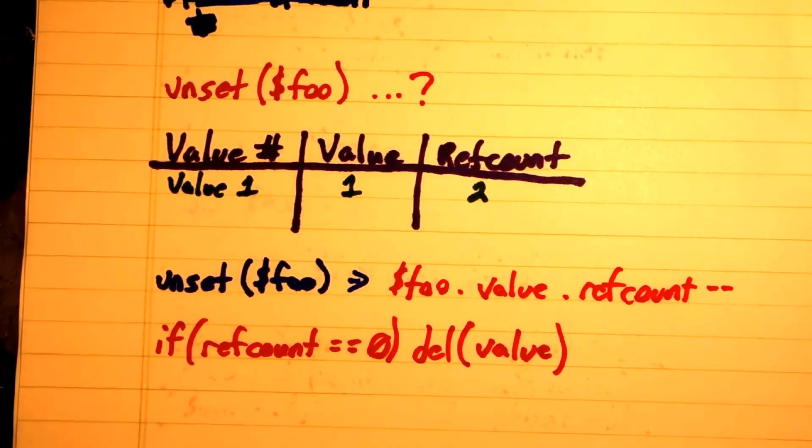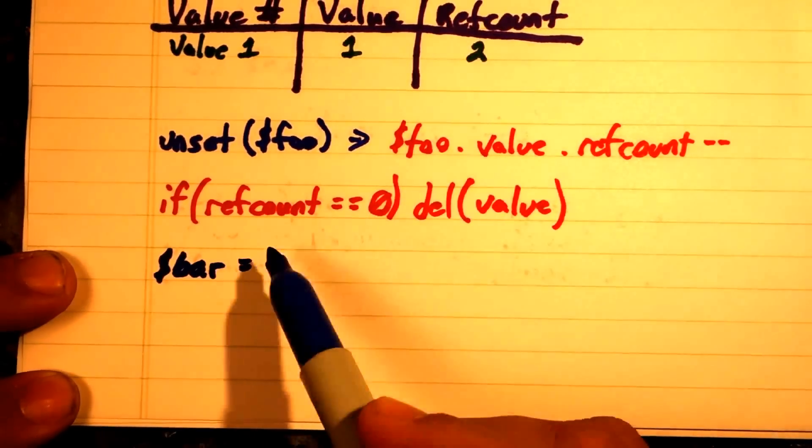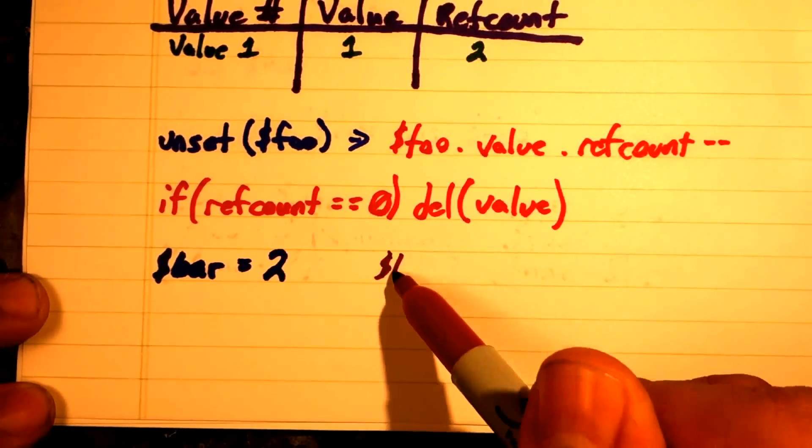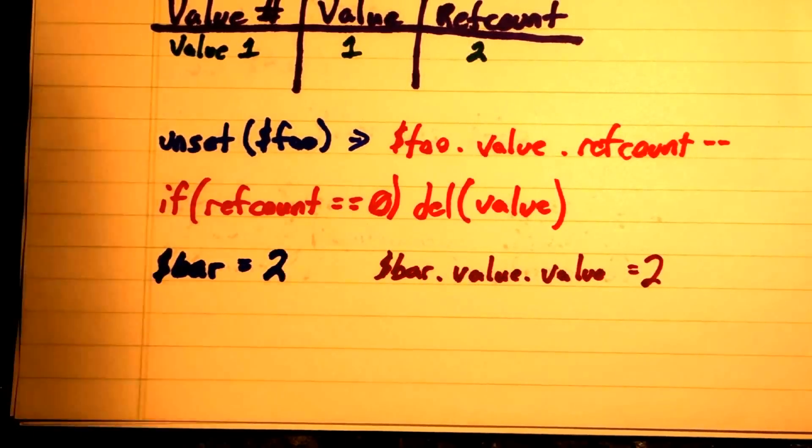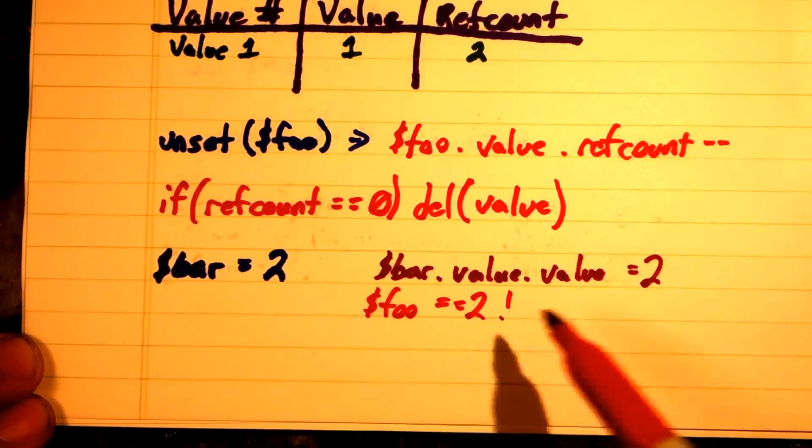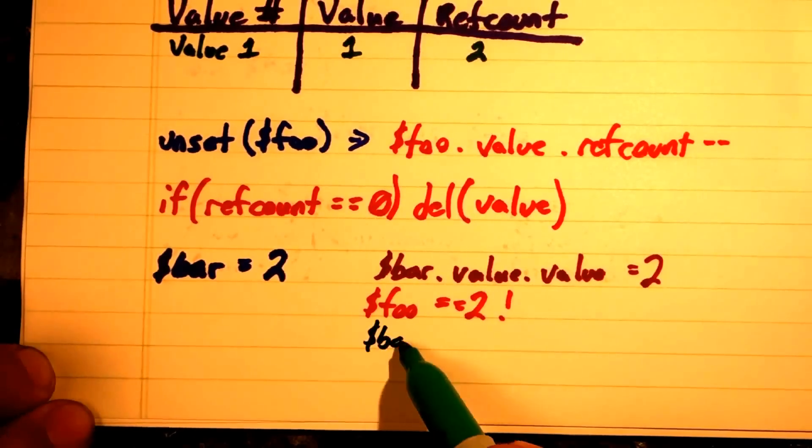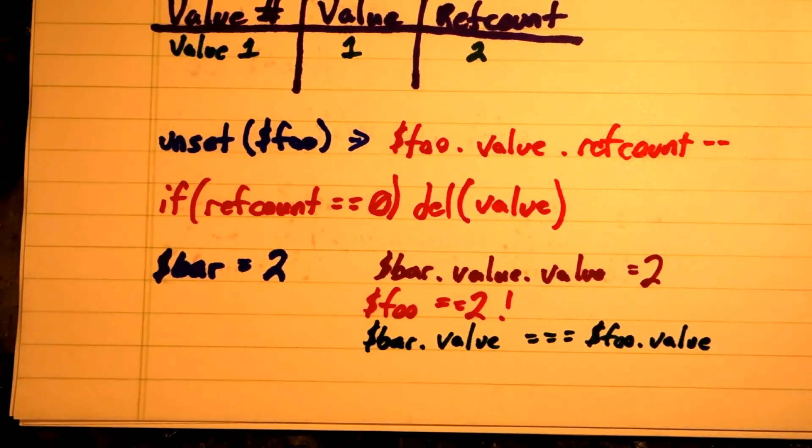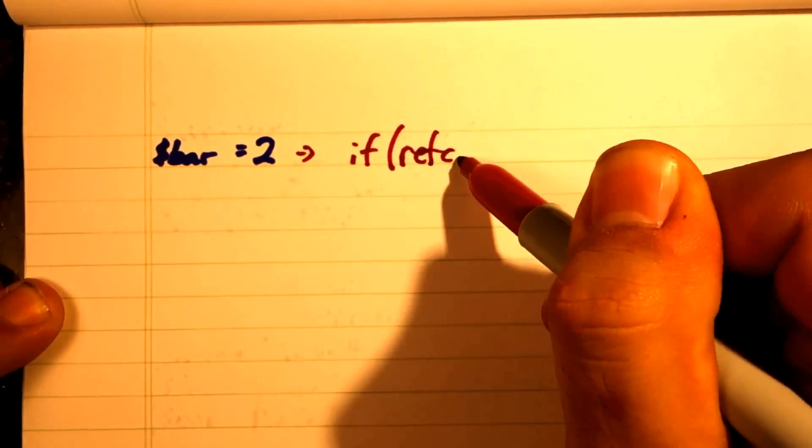But we have another problem. If we edit the copy of a variable, we're also editing the original one as well because they point to the same value. Luckily, we already have a way of fixing this. We can use the ref count to tell us when we can edit or when we need to copy the value first.